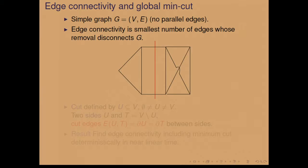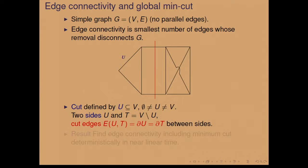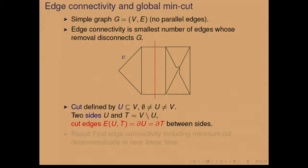In this graph here, we can just take out two edges. We're also looking at the dual — the cut defined by a set of vertices. This set of vertices has two sides: the set itself and its complement. The cut edges connect these two sets.